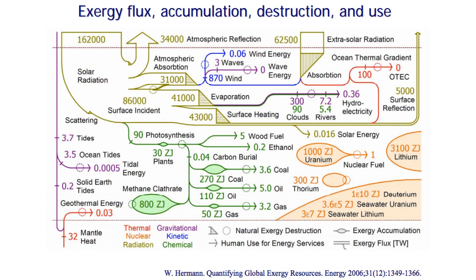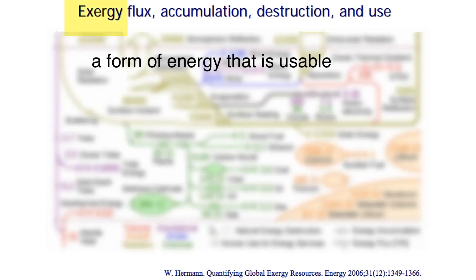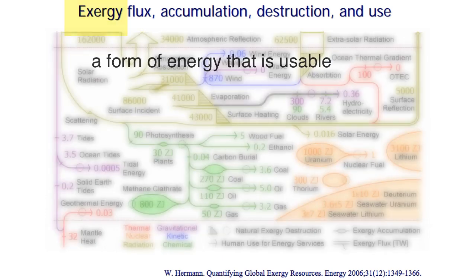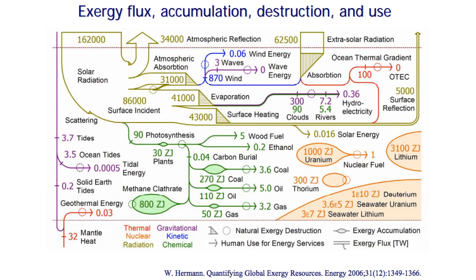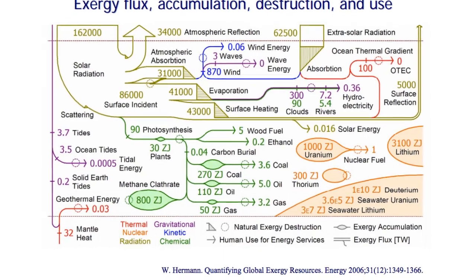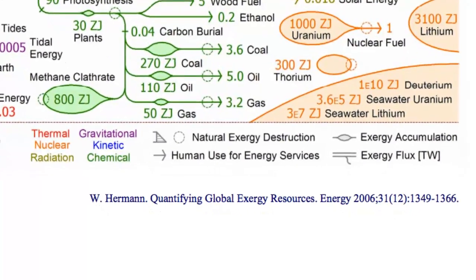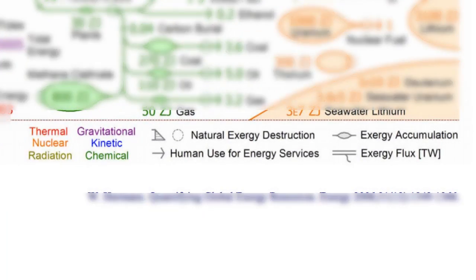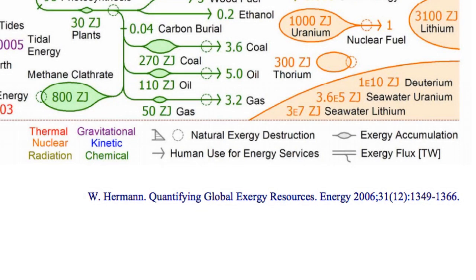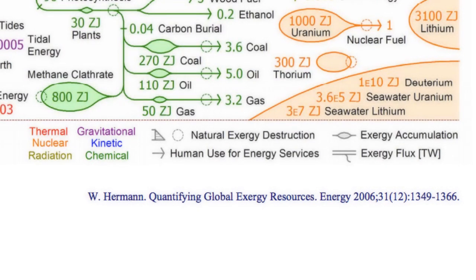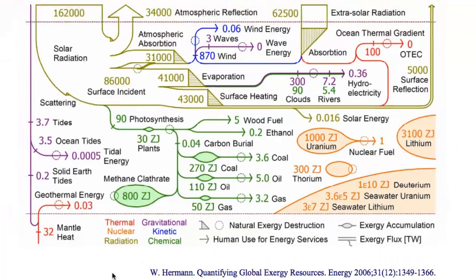This figure represents the flow on an annual basis of usable energy. This quantity is actually called exergy, and it's a high-grade energy that can be used to do work, as opposed to something like low-grade heat energy. So let's first go through the key to see what these different symbols mean. On the bottom you see that the different colors indicate the different types of energy resources.